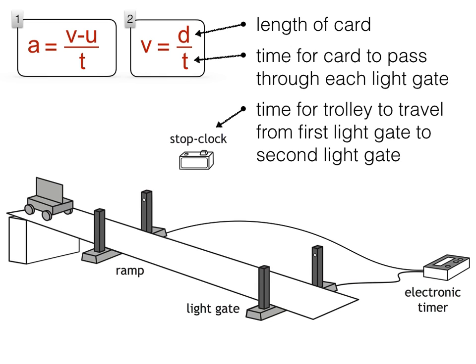To calculate the acceleration of the trolley, equation 1 is still used. This time though, the second equation has to be used twice. The initial velocity of the trolley U is calculated by dividing the length of the card by the time it takes to pass through the first light gate.